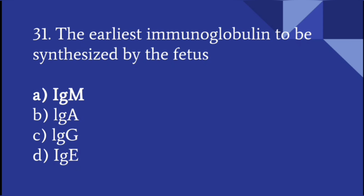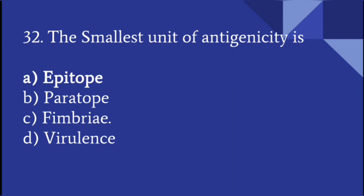The earliest immunoglobulin to be synthesized in a fetus is immunoglobulin M (IgM). The smallest unit of antigenicity is an epitope — the region on the antigen protein that triggers the cellular immune response.